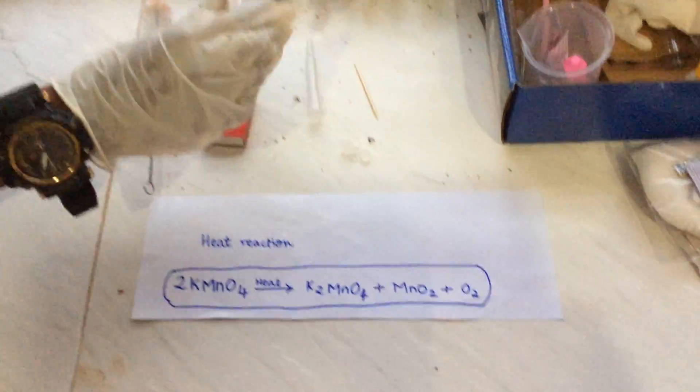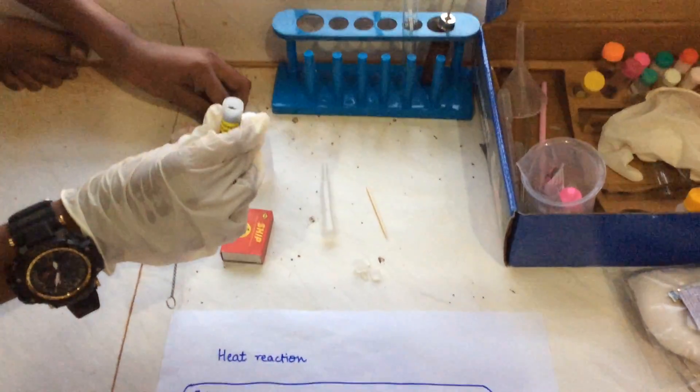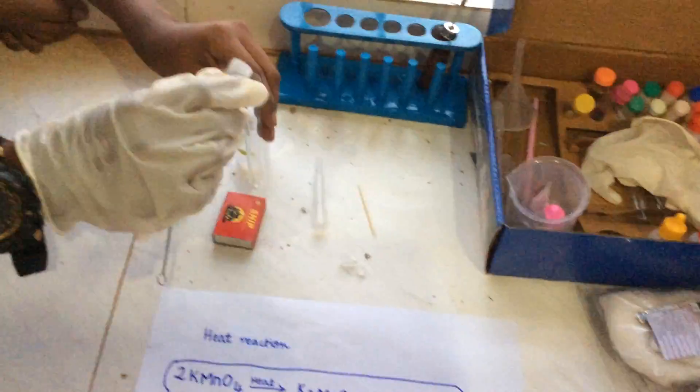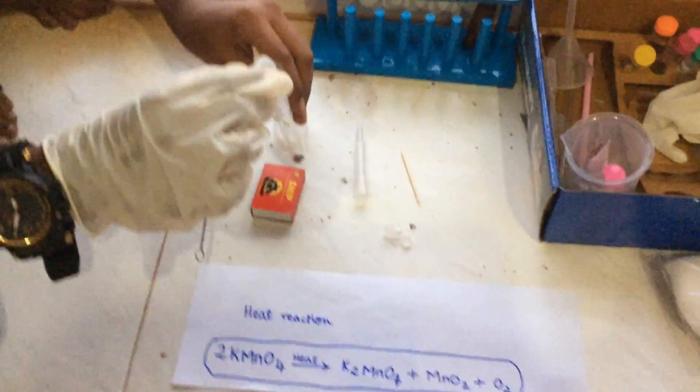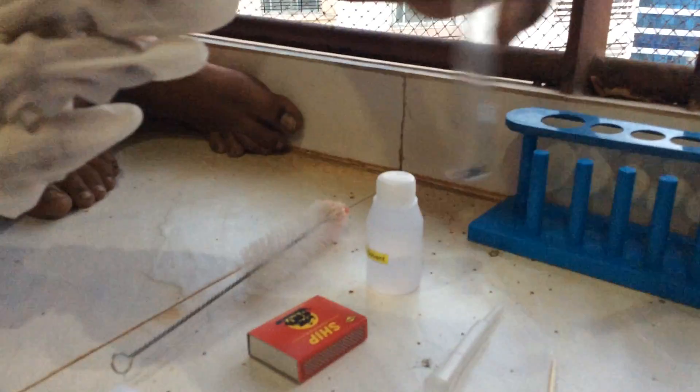using the flat end of a micro spatula, add 3 scoops of potassium permanganate in hard glass test tube, like this. He has added them, see,